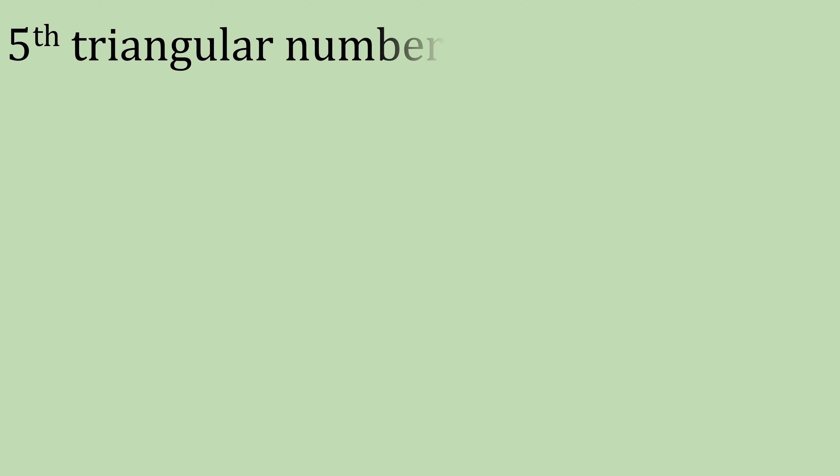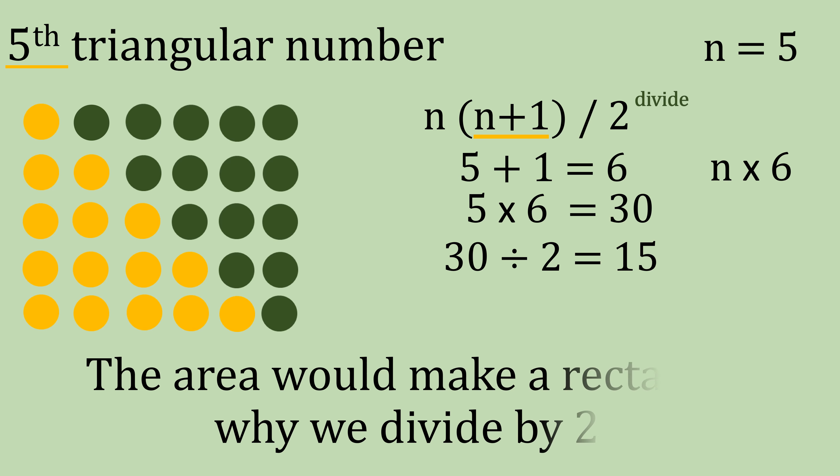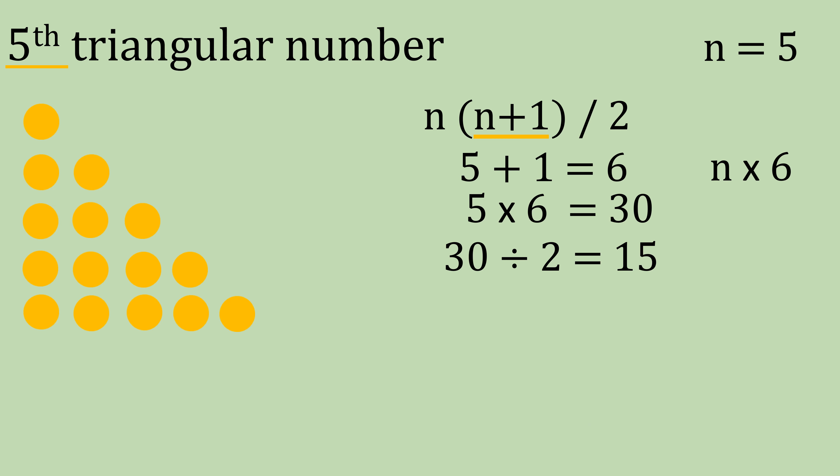Fifth triangular number. Pop up the formula, n equals five. Into the brackets then, five plus one is six. Then we're going to have n times six, which is five multiplied by six, which gives 30. Then we only have the divide left. 30 divided by two is, of course, 15. If you can have a look, you could see why we would divide it by two. Otherwise, the area would make a rectangle. So the answer to this one is 15.